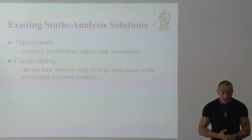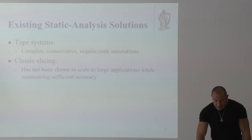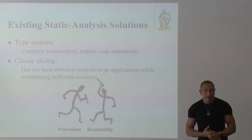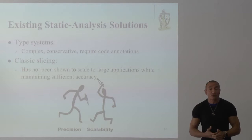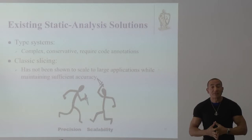Classic slicing leads us to a major conflict that everybody faces when using program analysis on large code: there is a conflict between precision and scalability. If you want the analysis to be very precise, you have to sacrifice scalability. If you want it to be very scalable, you have to sacrifice precision. How do we find the right balance?